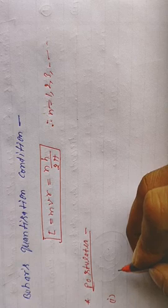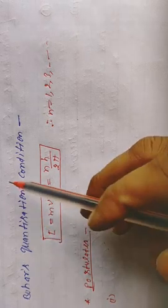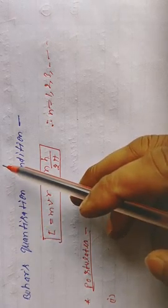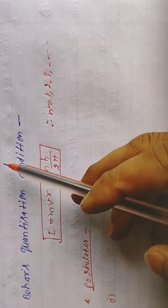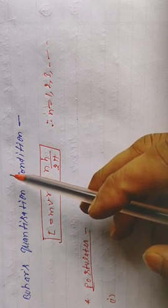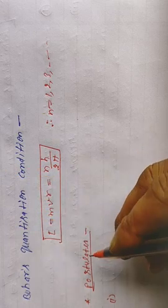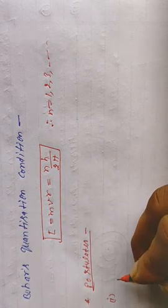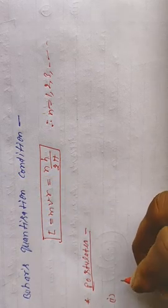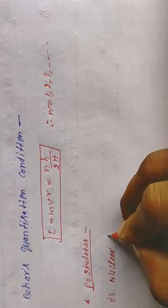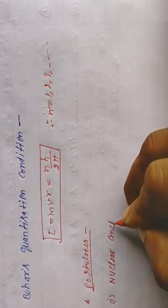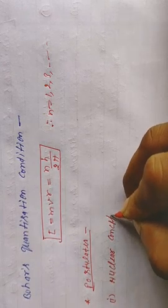Bohr के atomic model को हम Bohr's planetary model भी कहते हैं। तो first postulate क्या था इसमें? — nuclear concept।